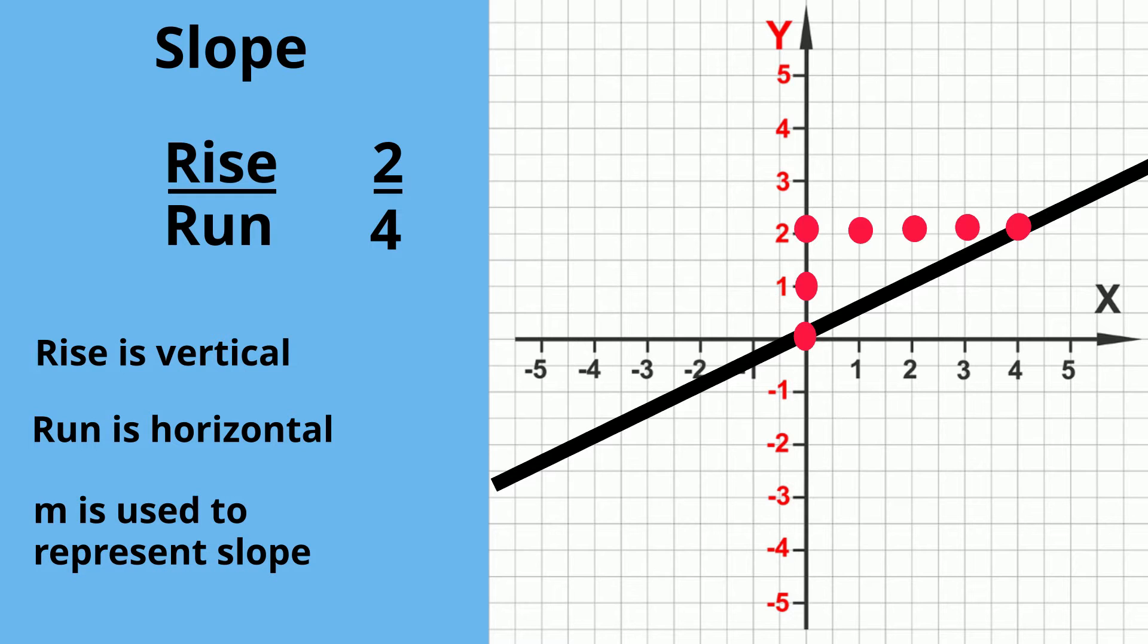M is used to represent the slope. As you move from left to right, the line goes upward, so the slope is positive.